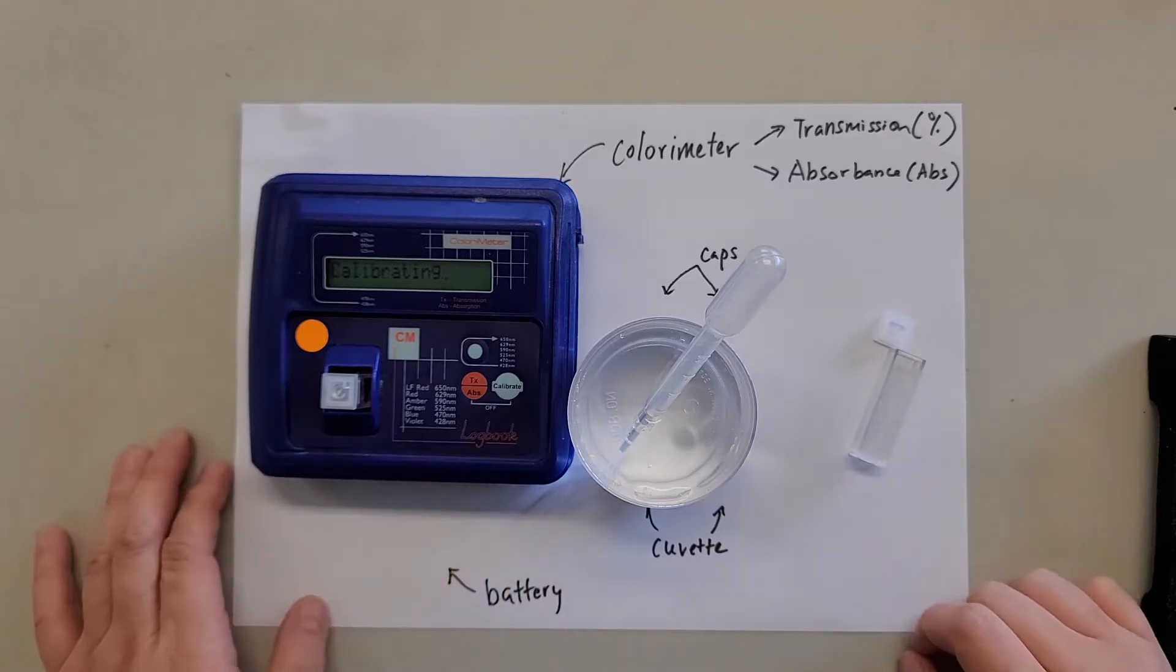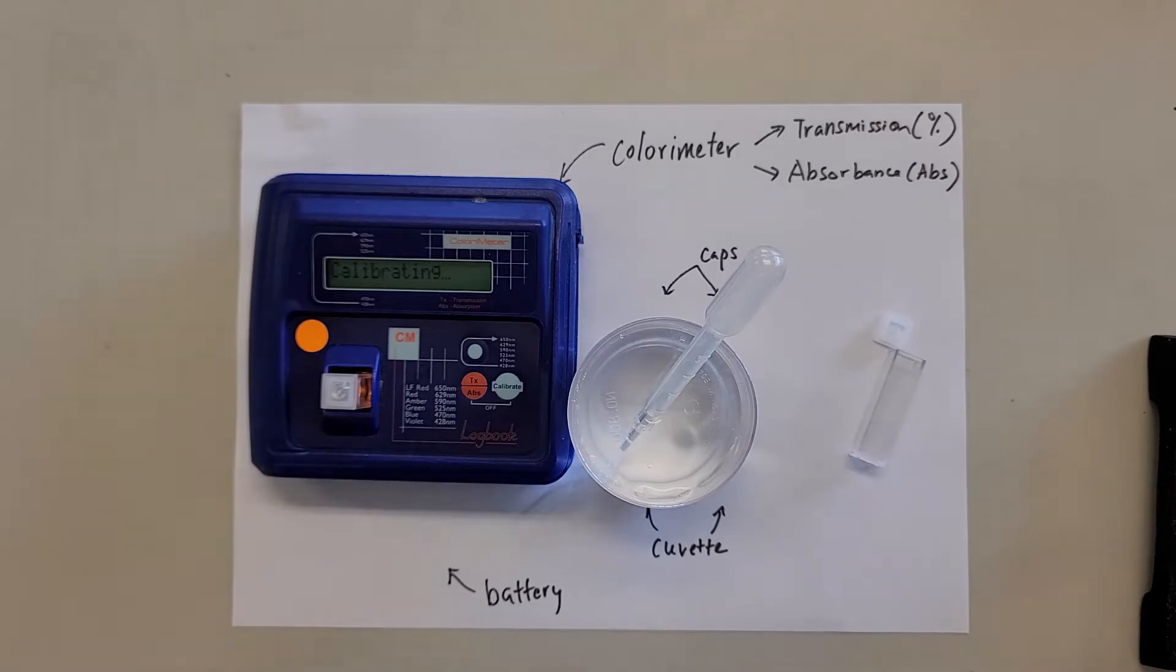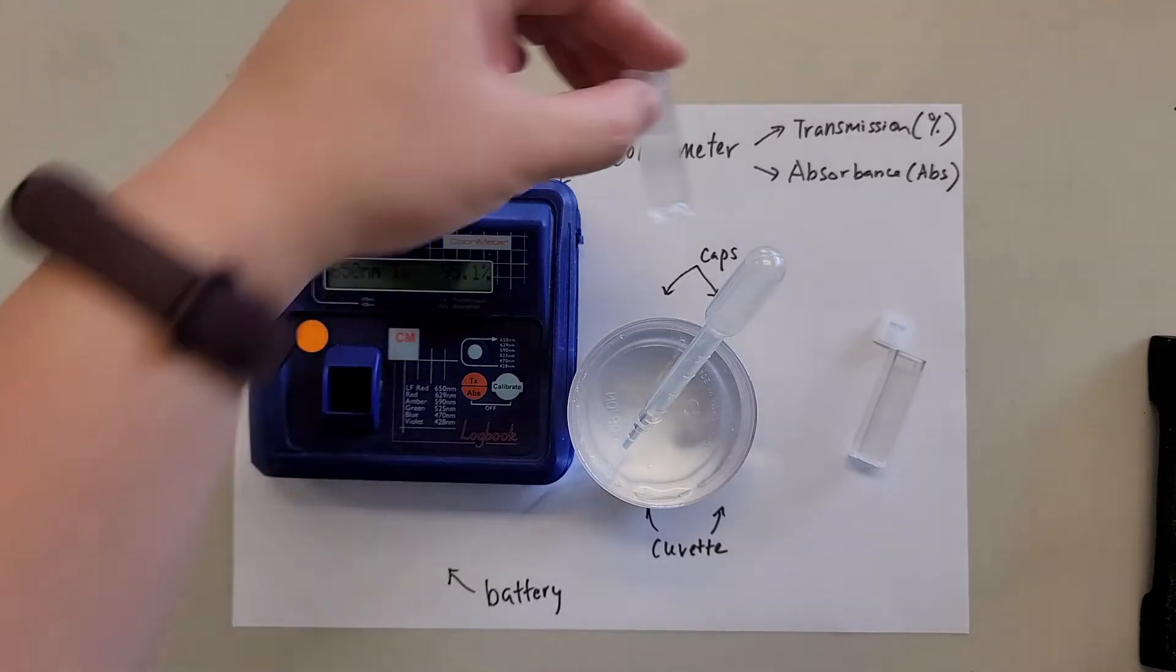And then press calibrate. So once it's calibrated, you can see that it's in transmittance 100. So that means all the light can pass through the distilled water. That's the calibration.